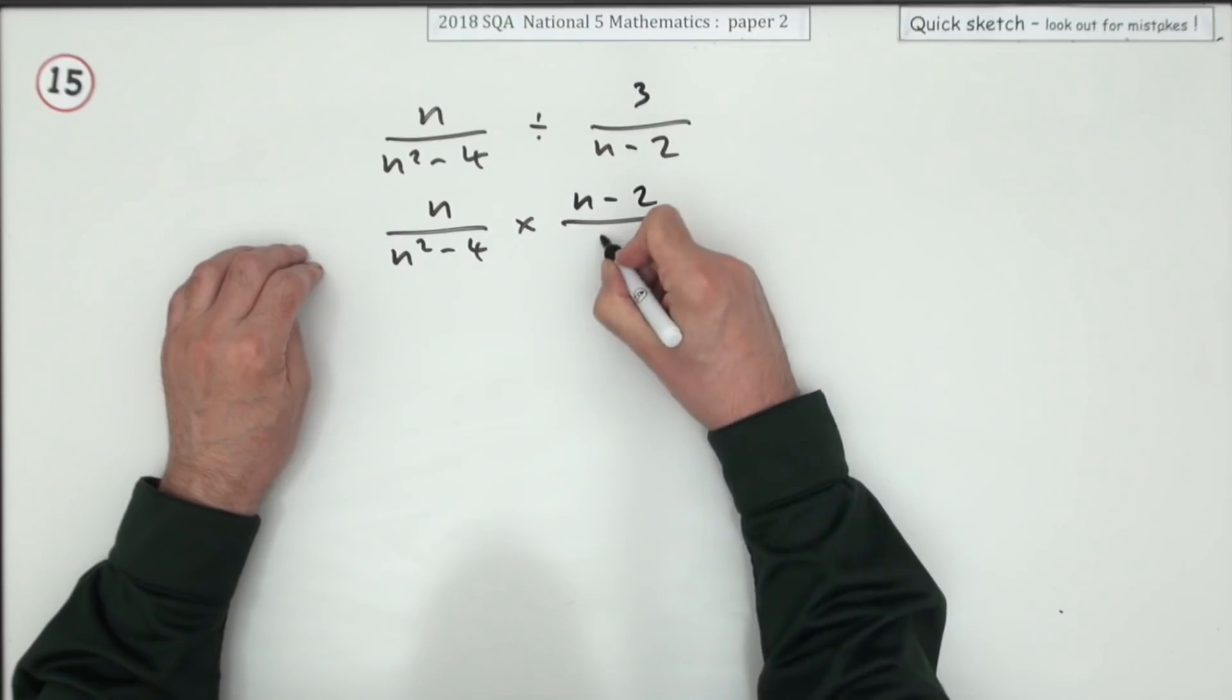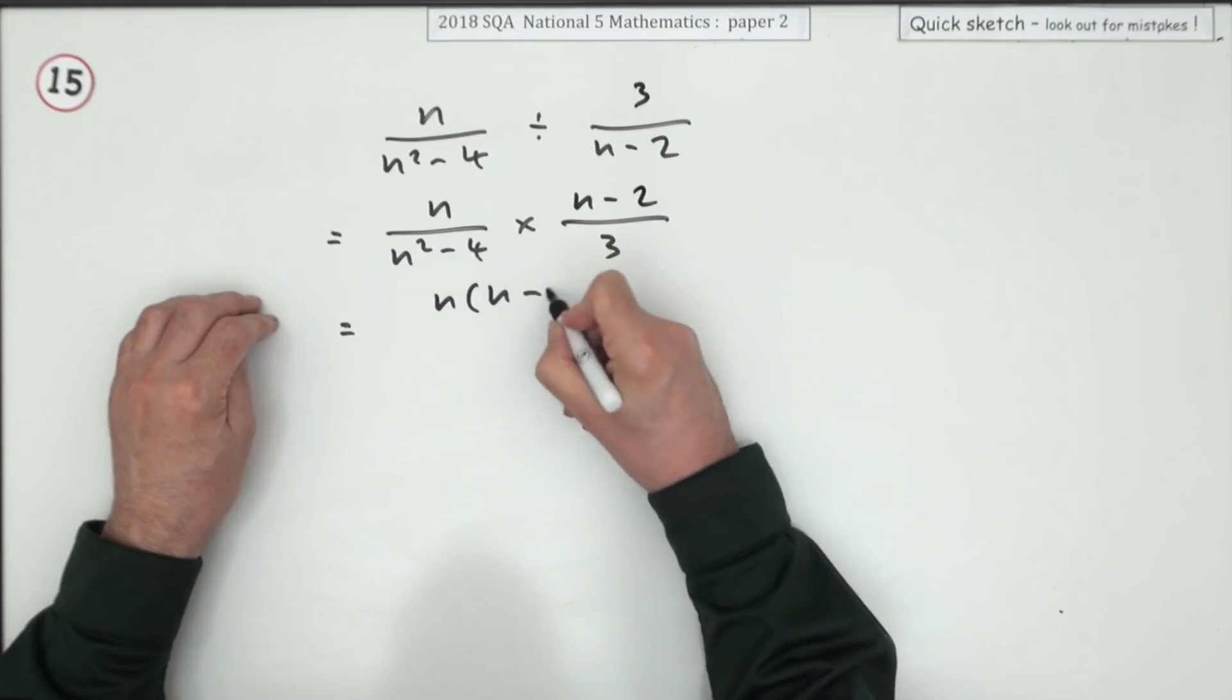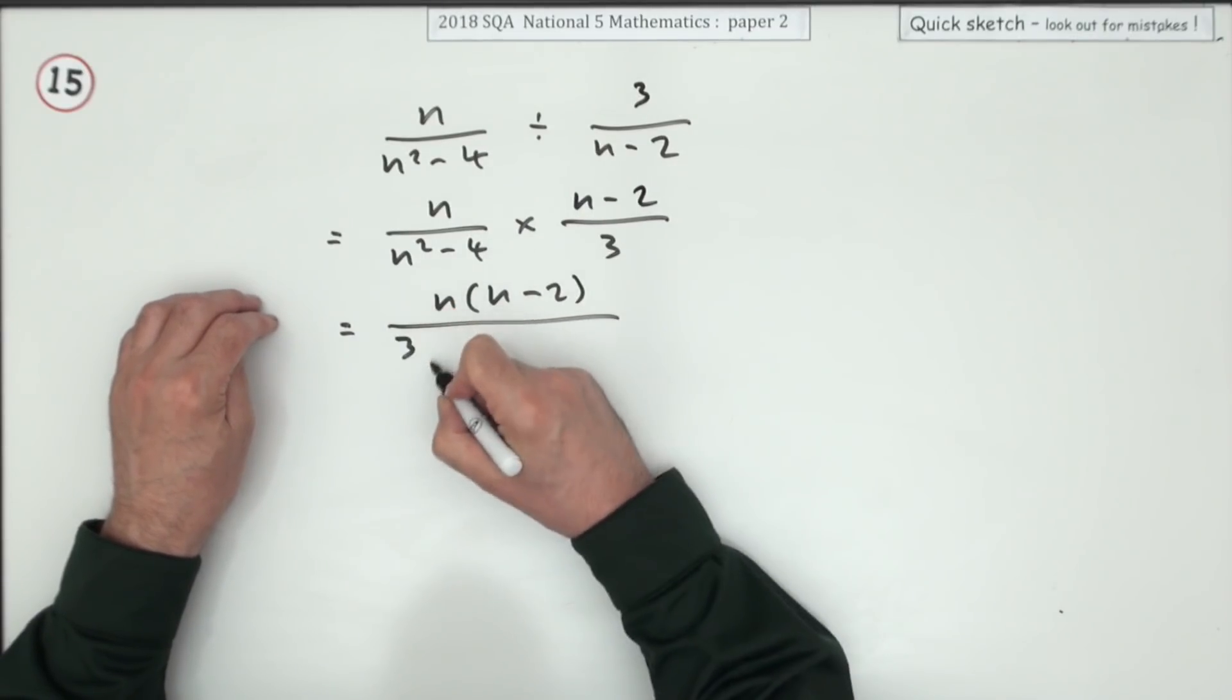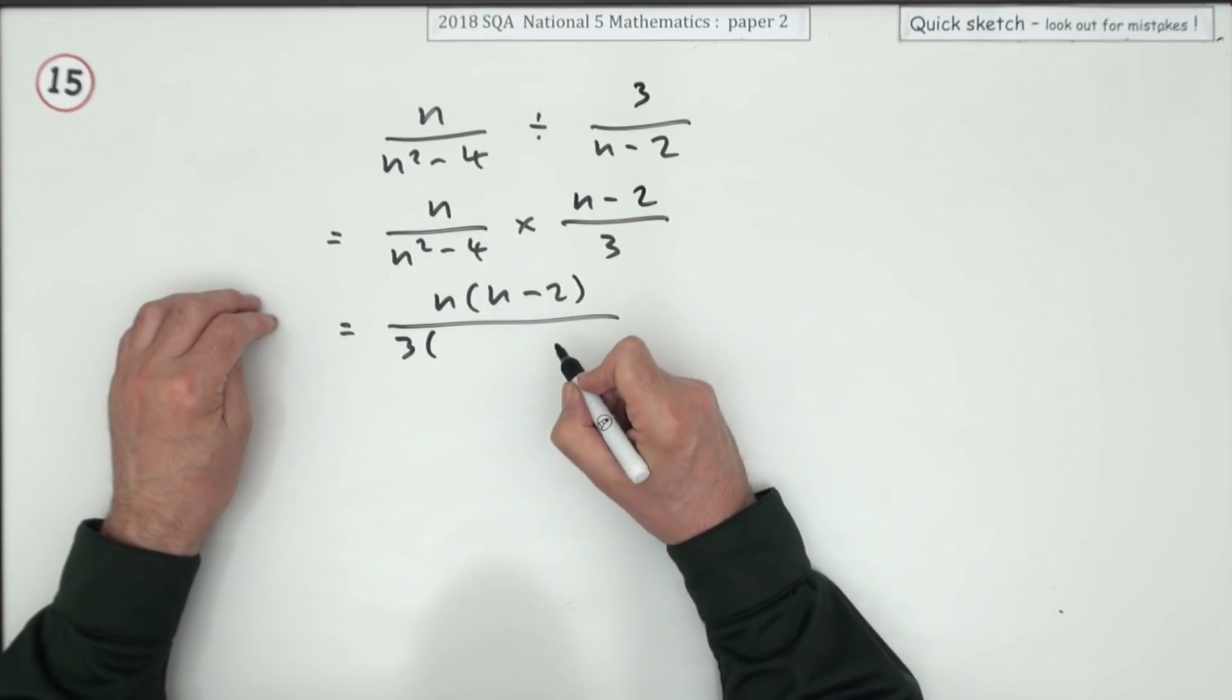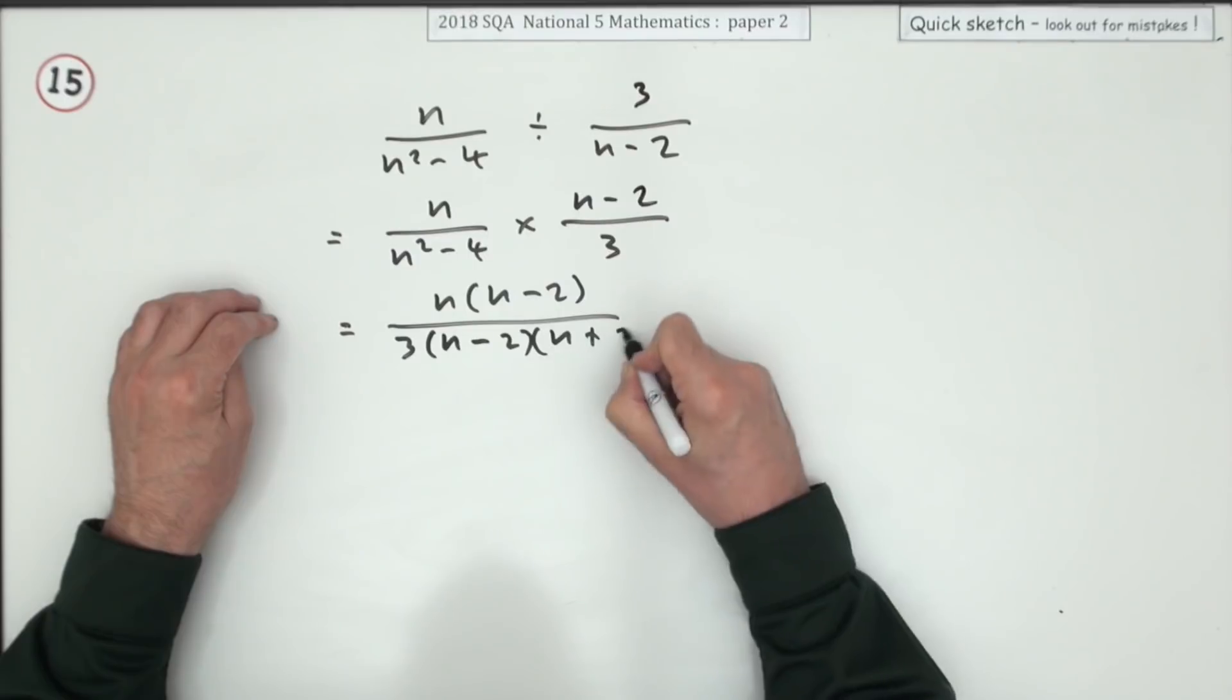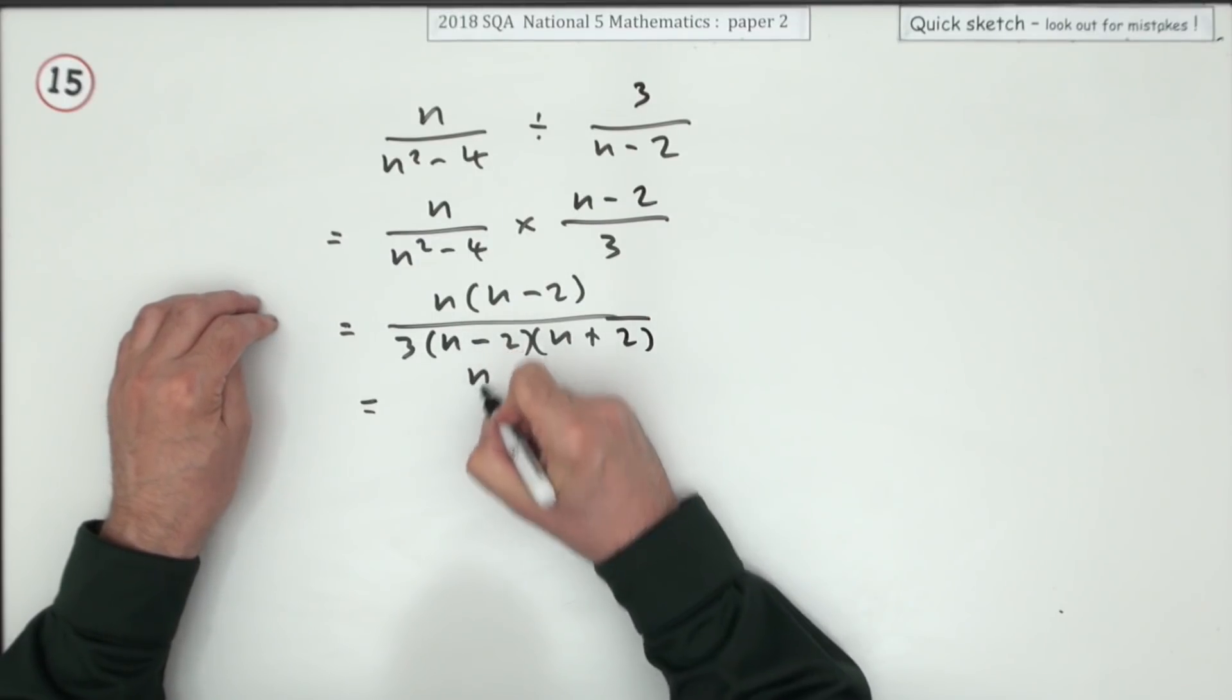So it'll be n minus 2 over 3. Maybe I'll just write that again: it's n times n minus 2, so that's factorized. I'll put that 3 at the front. Now this part here, n squared minus 4, can be written as n minus 2 times n plus 2. Those two parts will cancel.